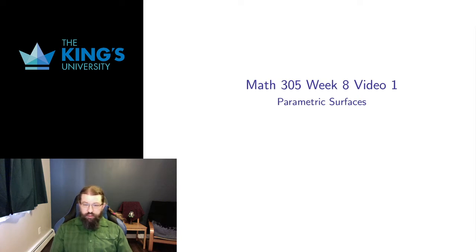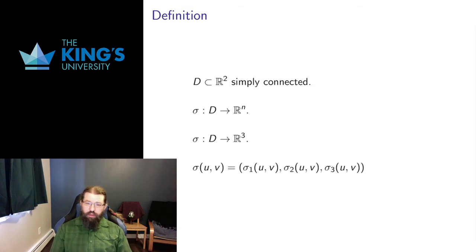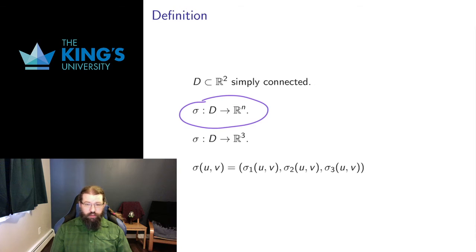This is going to be like surfaces we've seen before — lots of different two-dimensional objects, but now with a parametric description. The setup is this: I start on a simply connected set in R2. Previously for parametric curves I started on an interval, which is simply connected with no holes. Here we have two dimensions, so I want a set with no holes to get a parameterization that is one connected surface with no gaps. So I have a continuous function from that simply connected set in R2 into some Rn — and that's my definition of a parametric surface.